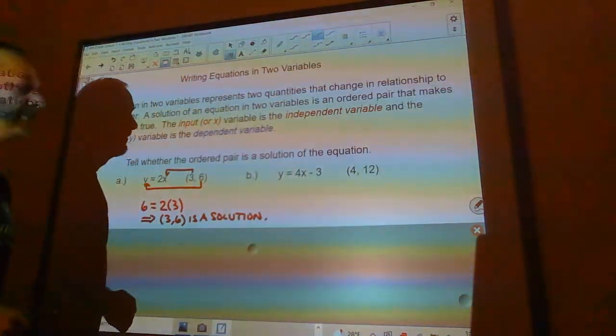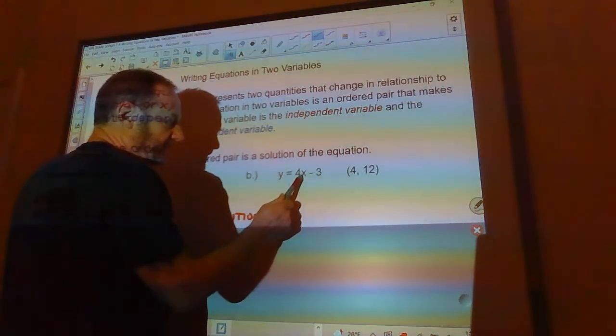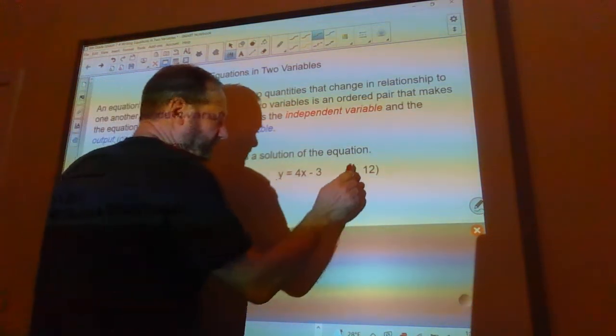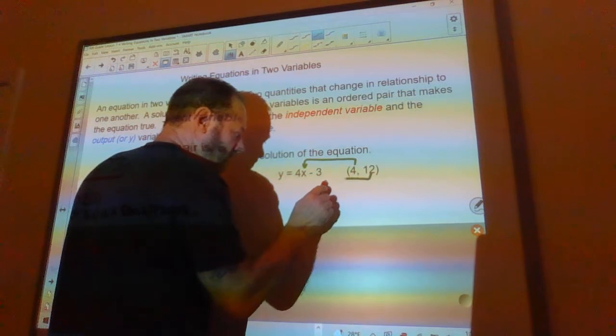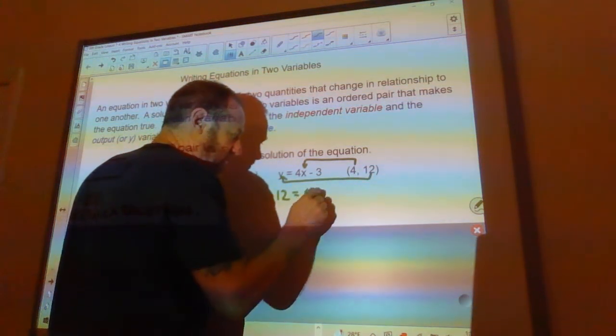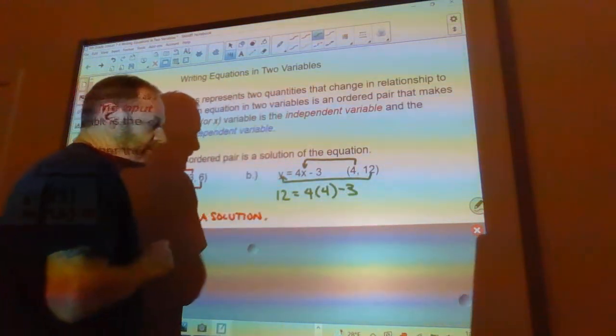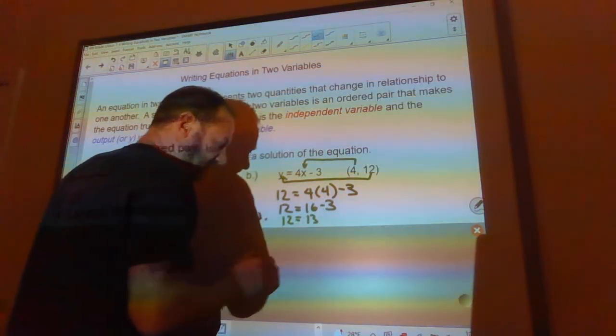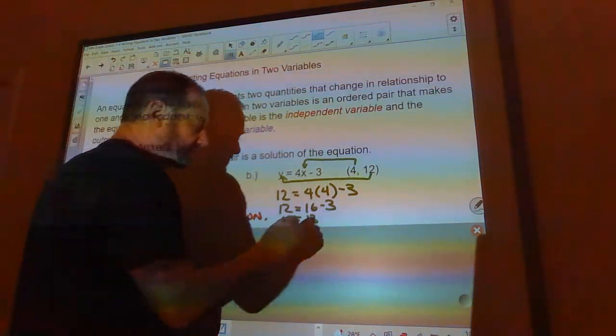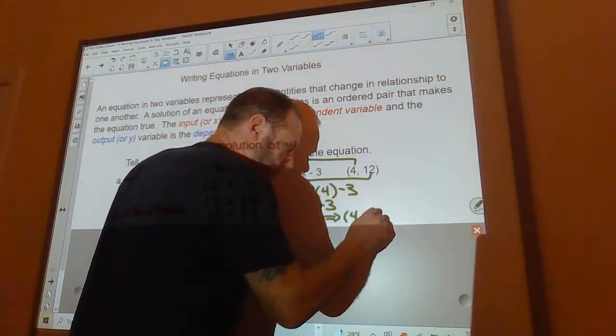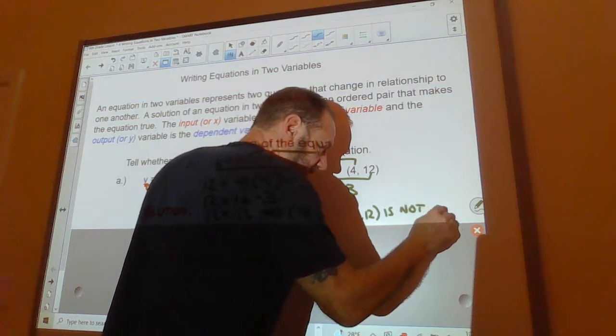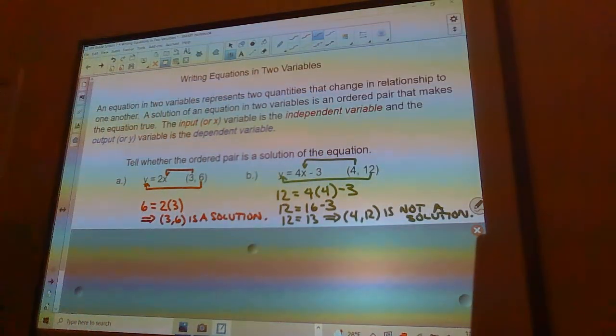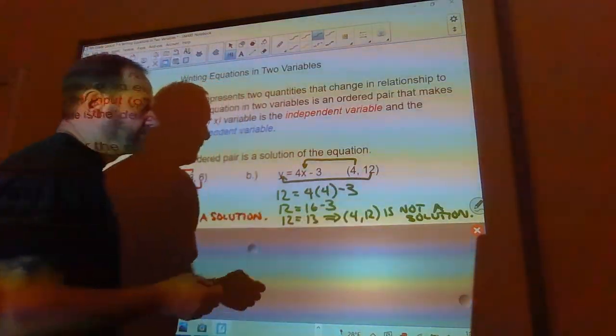Now over here, we've got another equation. Here's my input, my independent variable. That in this case is 4. And then here's my dependent variable, y. So what I'm going to do is put it in here and take the y and put it in over here and I get 12 equals 4 times 4 minus 3. So 12 would equal 16 minus 3. So 12 would equal 13. Then we know that that's not true. So this implies that (4, 12) is not a solution. Should actually be (4, 13) would be the solution.